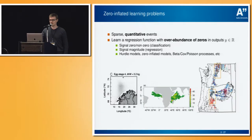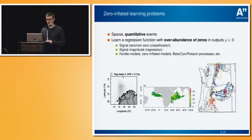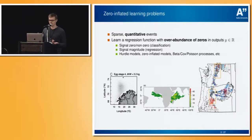As a motivation, there are these things called zero-inflated learning problems, where we basically have data which are sparse but have quantitative events. We need to learn a regression function where we have an overabundance of zeros in the outputs. For example, we could have ecological datasets where we have fish eggs or fish abundances in the sea — most regions are completely devoid of the species, and then somewhere we do have some quantitative amount of fish.